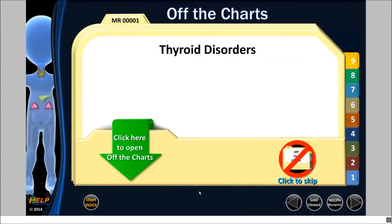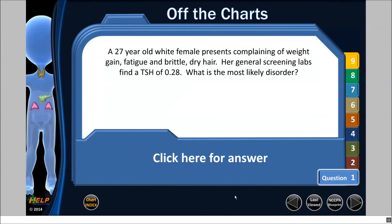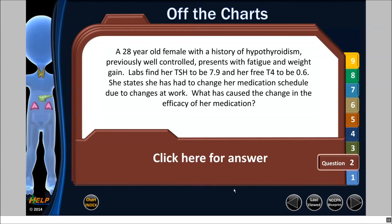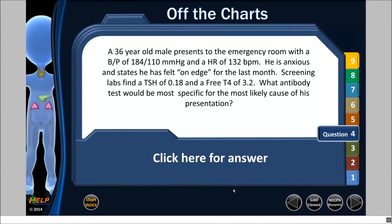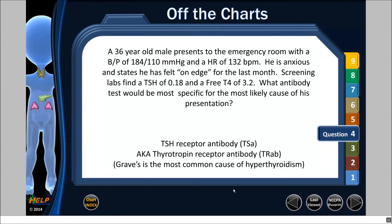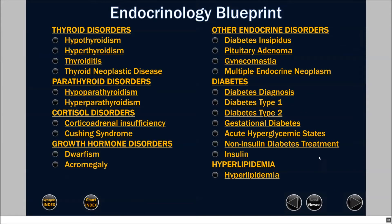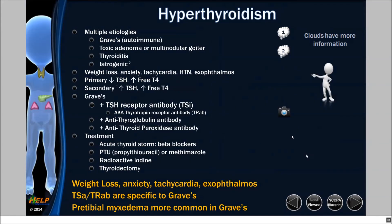After that, you want to make sure that you understood what you went through and that you retain the information. Here's your off-the-charts section. You can click to open the charts, use your up and down keys, or just click one question if you want. Ask yourself the question — do you know the answer? If you don't know the answer, and it's a hyperthyroidism question, you can always go back to your blueprint, go back to hyperthyroidism, and review that topic again.